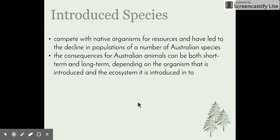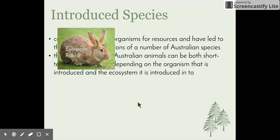Introduced species compete with native organisms for resources and have led to the decline of a number of Australian species. The consequences can be both short-term and long-term, depending on the organism introduced and the ecosystem it enters. If the ecosystem is well-balanced, the impact may not be massive; however, if the ecosystem is already weakened, a new species can completely disrupt it. For example, the European rabbit has had massive impacts on rural areas — they dig burrows that ruin soil integrity and cause erosion.